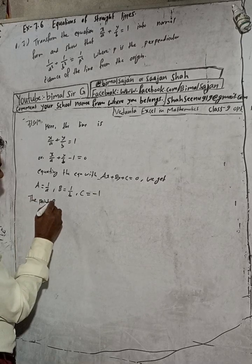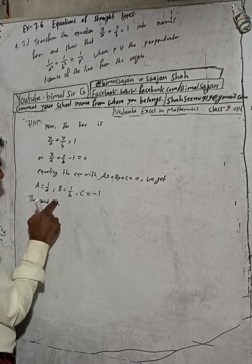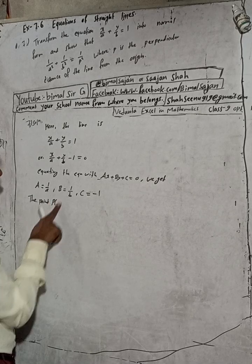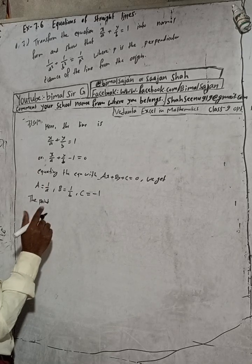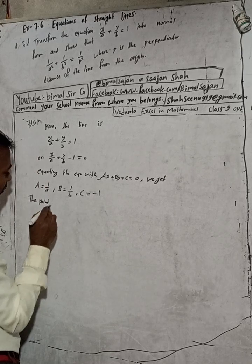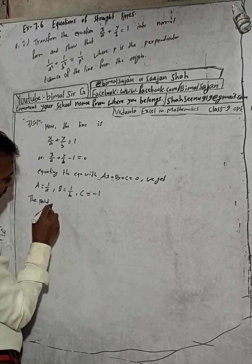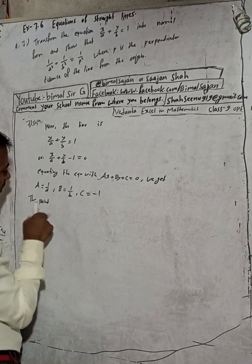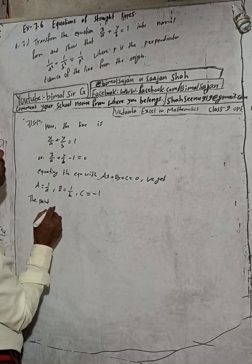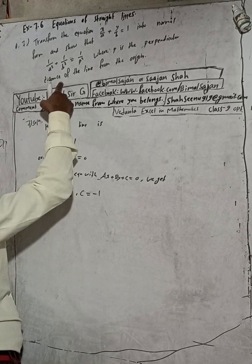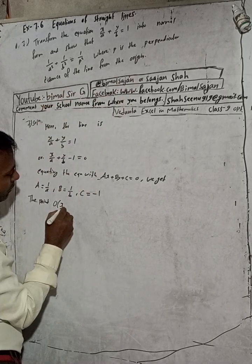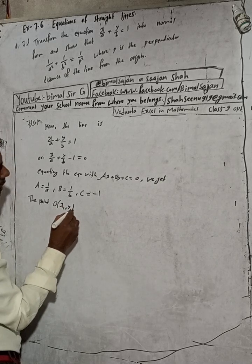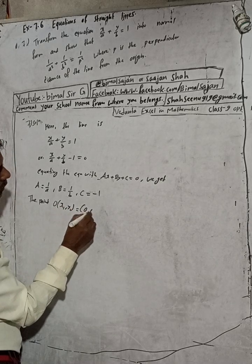And this capital c is equal to minus 1. And the point, I will suppose this point p is given. The p is the perpendicular distance, so I will suppose, let the point be the origin. So this is the point from the origin, 0 comma 0.